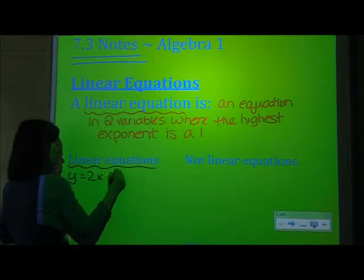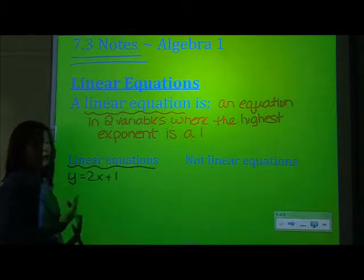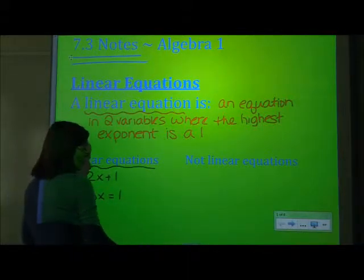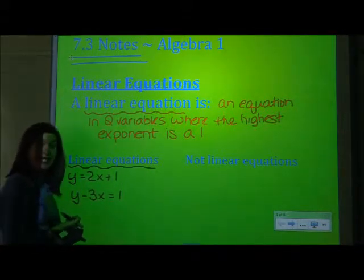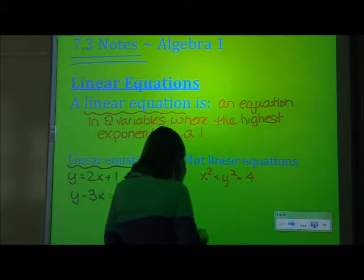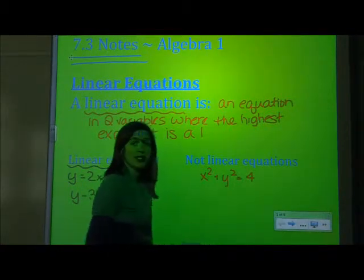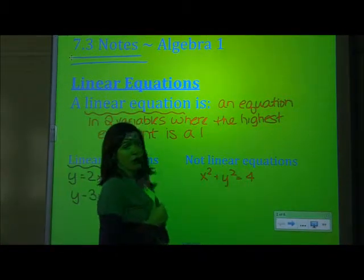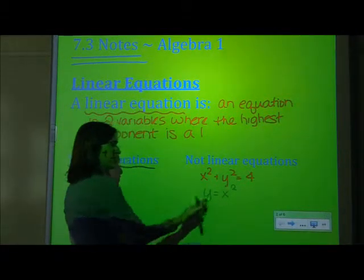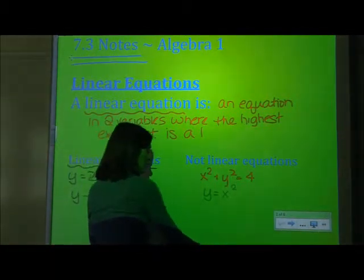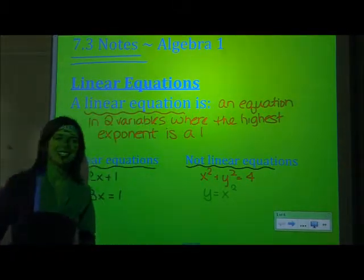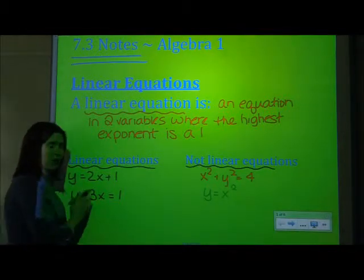So let's look at things that are linear equations. y equals 2x plus 1 is a linear equation because the x and the y both have a highest exponent of 1. Or, y minus 3x equals 1 — again, highest exponent of x and y is 1. Not linear equations: x squared plus y squared equals 4, because the highest exponent is 2, not 1. What about y equals x squared? Again, highest exponent is 2, so it's not going to work. It's really important to distinguish when something is linear — we're looking for those highest exponents to be 1.